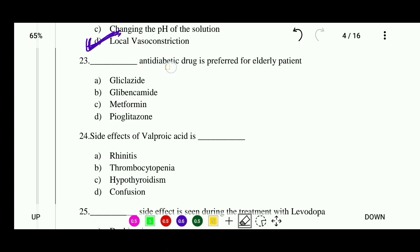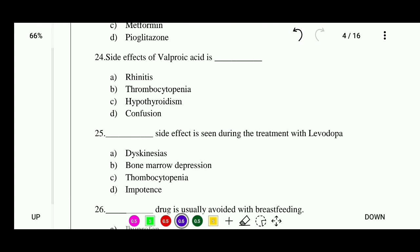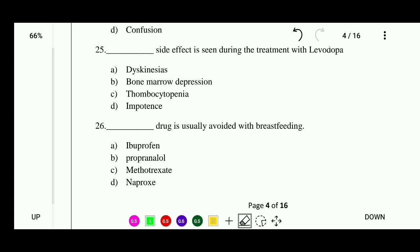Question 23: Which anti-diabetic drug is preferred for elderly patients? Options: gliclazide, glibenclamide, metformin, or pioglitazone. The correct answer is gliclazide. Question 24: Side effect of valproic acid — options: rhinitis, thrombocytopenia, hypothyroidism, or confusion. The correct answer is thrombocytopenia. Question 25: Side effect seen during treatment with levodopa is — options: dyskinesia, bone marrow depression, thrombocytopenia, or impotence. The correct answer is dyskinesia.